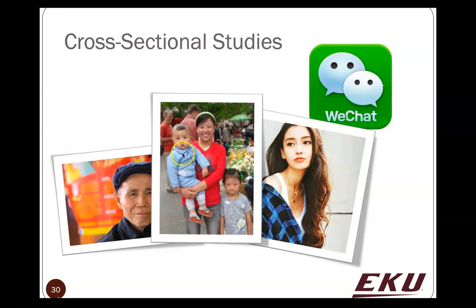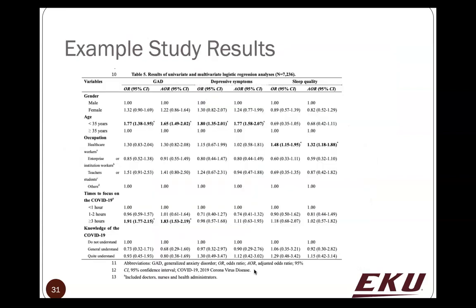They used WeChat to gather information from all these different types of people, but do you see any design flaws? Is it okay to just advertise on Facebook or Snapchat that you're doing a survey and anyone can participate? Who will actually read and click on the advertisement? Is it truly random? That's a design flaw — it's one thing to uniquely and randomly identify people to participate; it's another to advertise openly, because response bias of who chooses to volunteer may not reflect the true Chinese population.